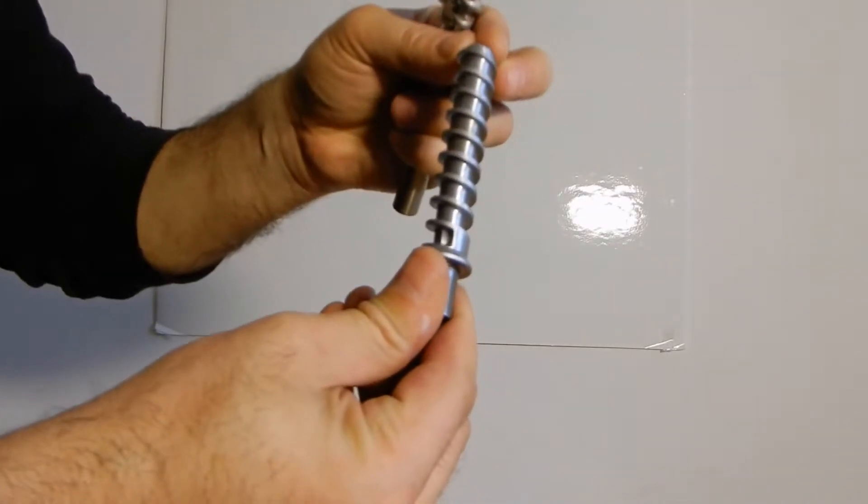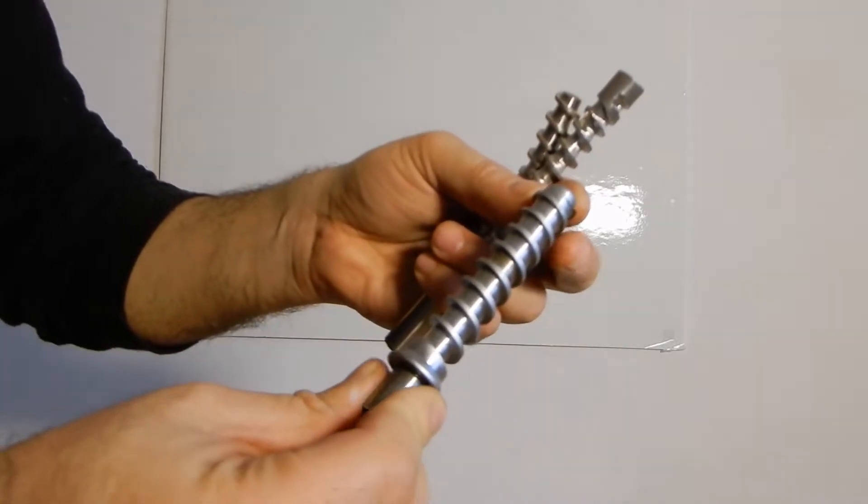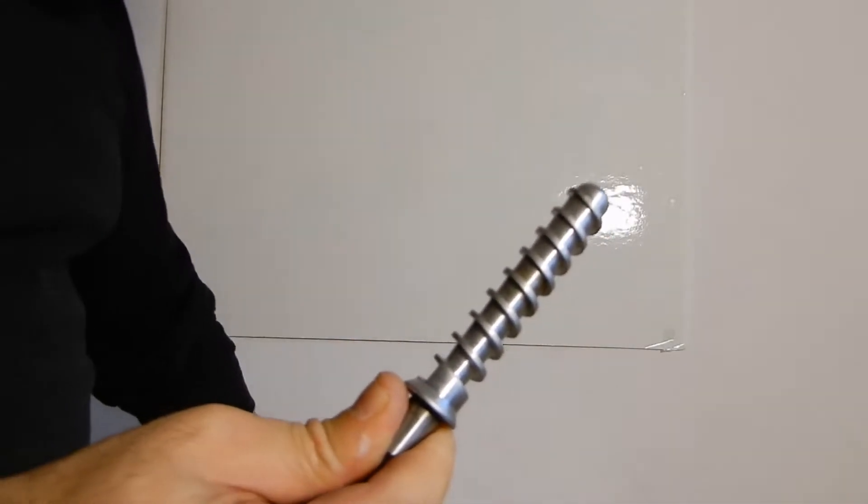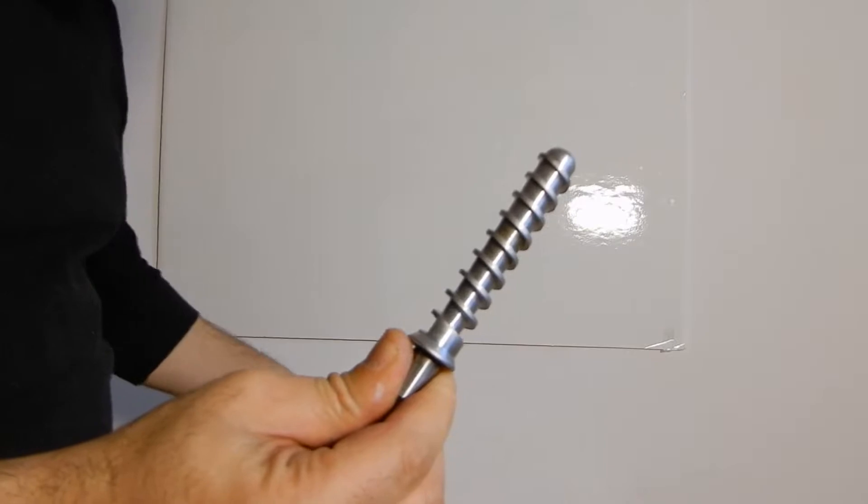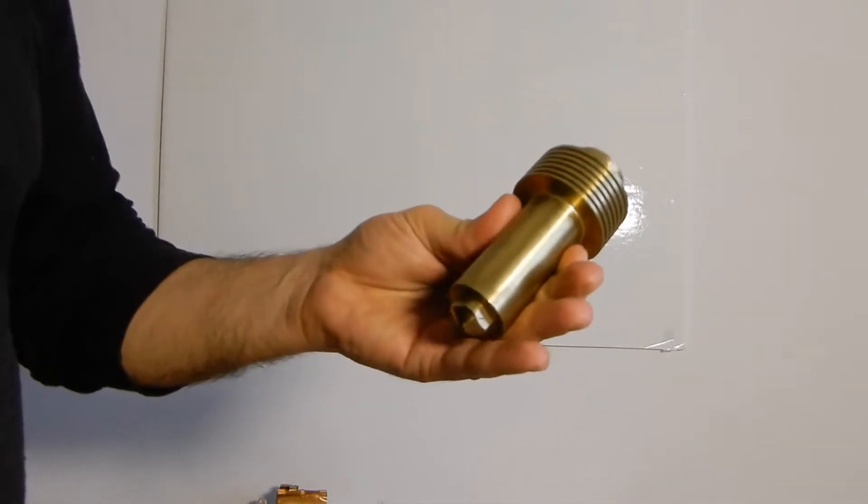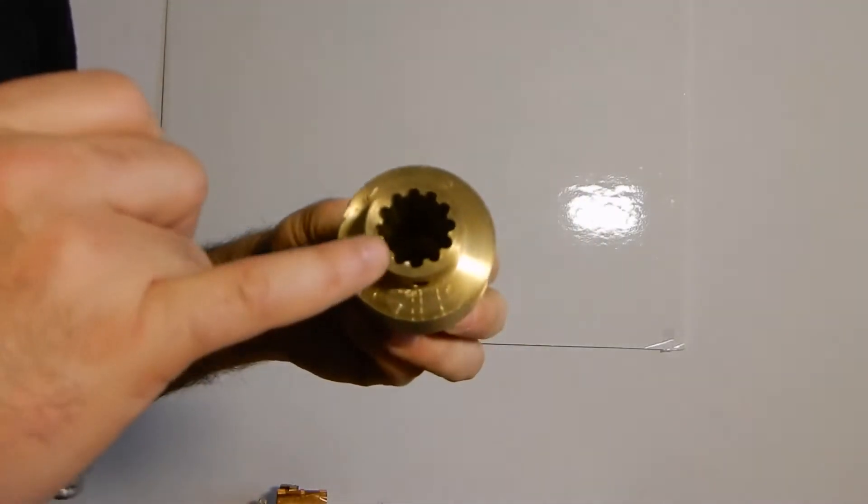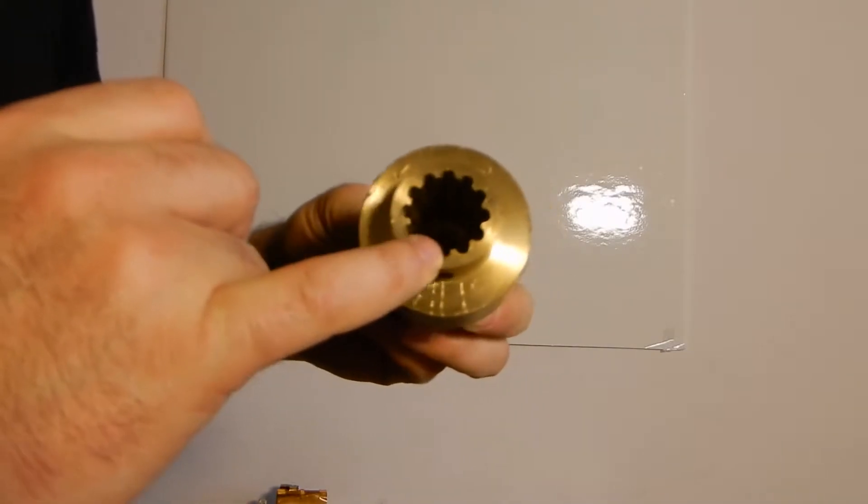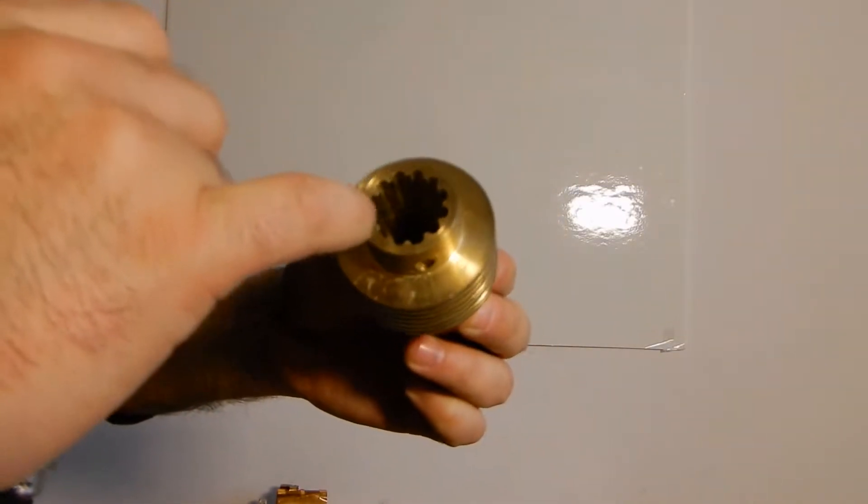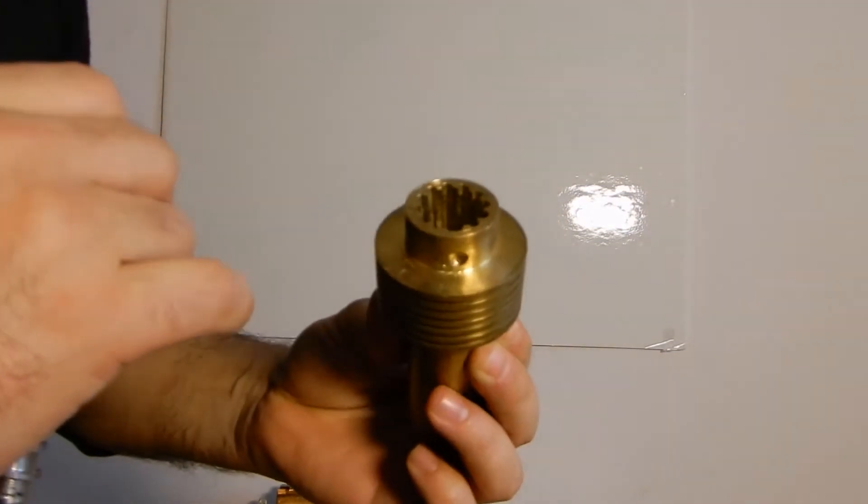This screw is factory made. It was from my pellet extruder from the first video. And this is the barrel for it. As you can see, you have to have these grooves to be able to push the pellets inside.